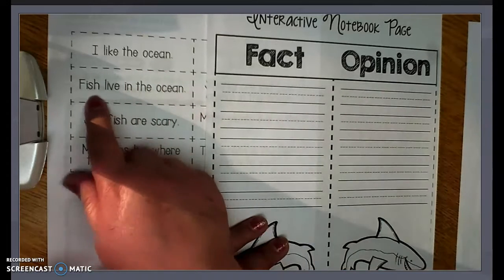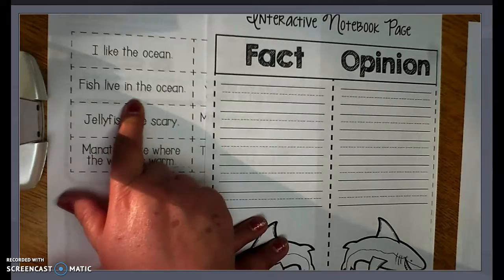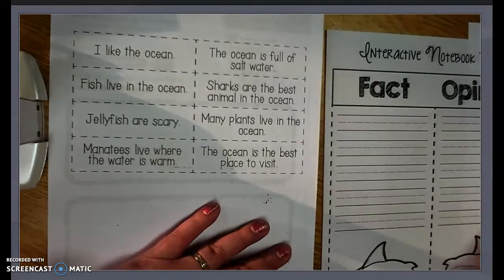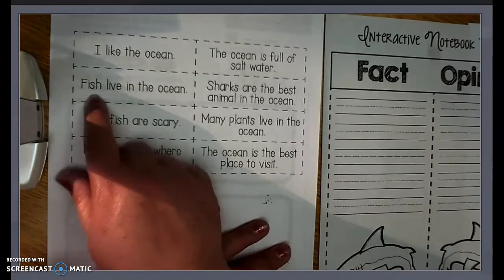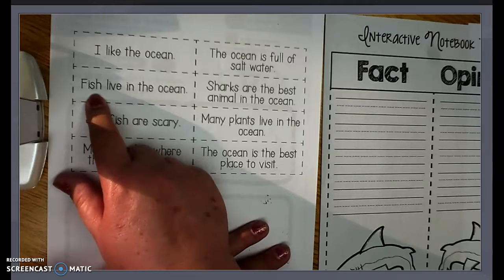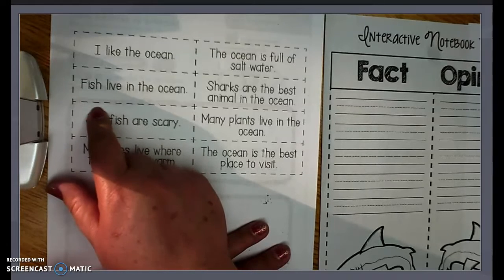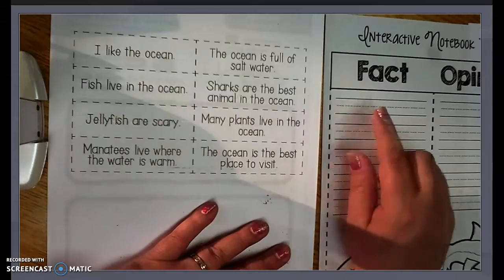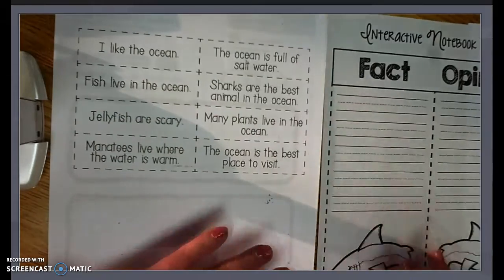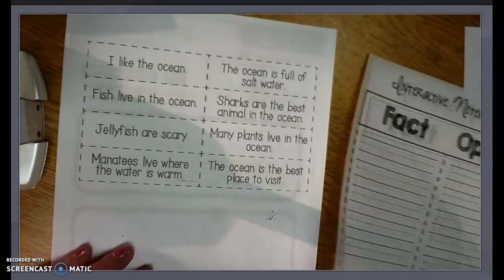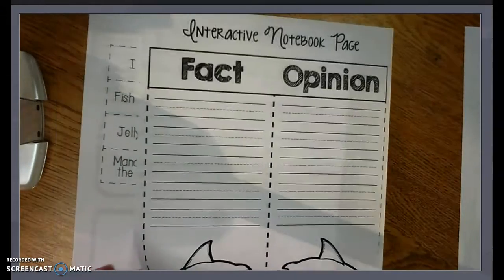So if fish live in the ocean, now, do they live in other places? Well, yeah, they do. But we're not talking about a goldfish that could live in maybe like an aquarium. We do know for a fact that fish do live in the ocean. So then that would be a fact. So you're going to cut those out and place them on the correct column that they belong in.